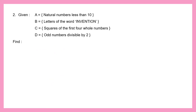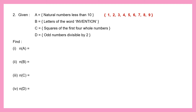Next question, Question 2: Four sets are given to us — A, B, C and D. Set A is natural numbers less than 10. Set B is letters of the word 'invention'. Set C is squares of the first four whole numbers. Set D is odd numbers divisible by 2. We need to find the cardinal number of each set. Starting with set A — natural numbers less than 10 are 1, 2, 3, 4, 5, 6, 7, 8 and 9. So the cardinal number of set A is 9.